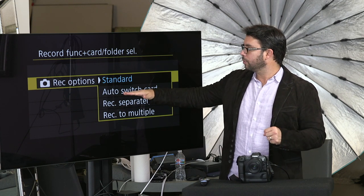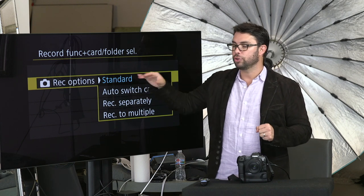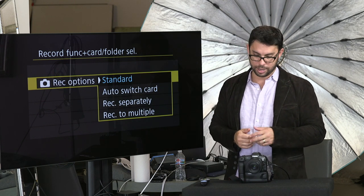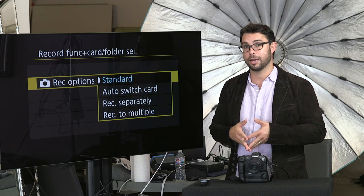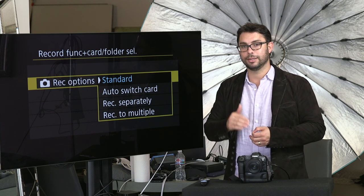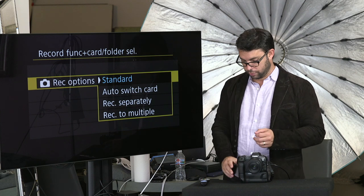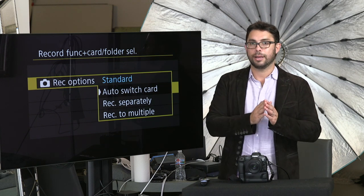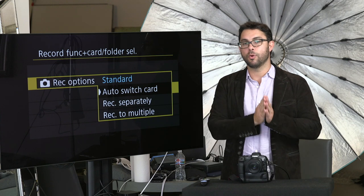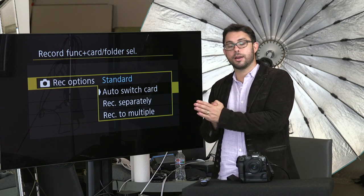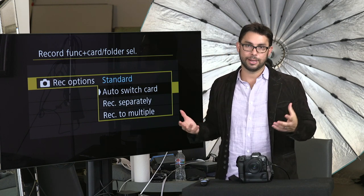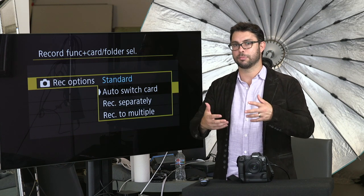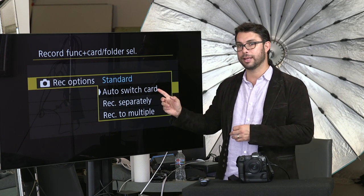If you do auto switch card, it means that if you have two memory cards in your camera — you can put CFexpress and an SD card. If you have both in the camera and you choose auto switch card, it will automatically switch once one card is full. It will switch over to the second card and you will have more space to continue shooting without having to run and change the memory card. Very nice and very handy.